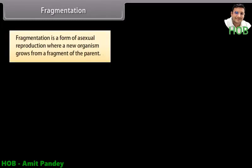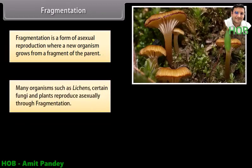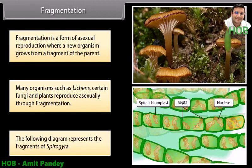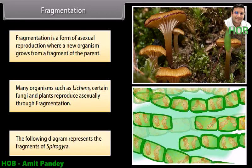Fragmentation. Fragmentation is a form of asexual reproduction where a new organism grows from a fragment of the parent. Many organisms such as lichens, certain fungi, and plants reproduce asexually through fragmentation. The following diagram represents the fragments of Spirogyra.